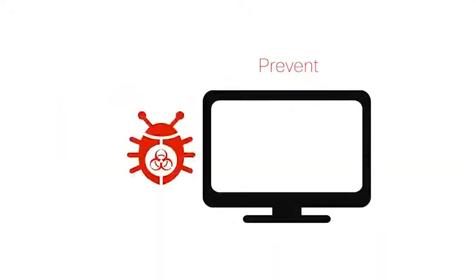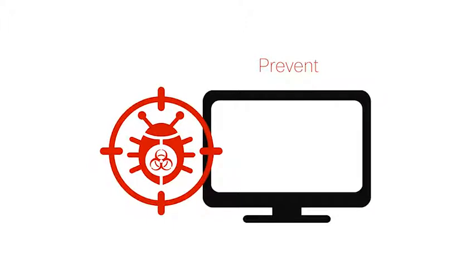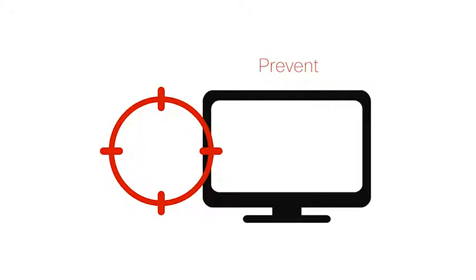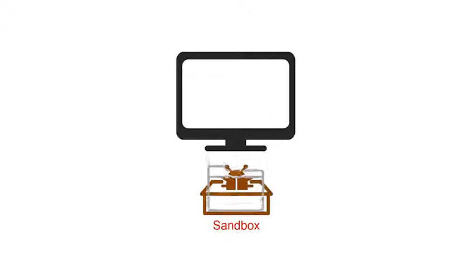Cisco AMP for Endpoints inspects files at point of entry onto the endpoint, preventing the known bad files from entering. Meanwhile, unknown files can automatically be sent to AMP Sandbox, where they will be analyzed for malicious behavior.